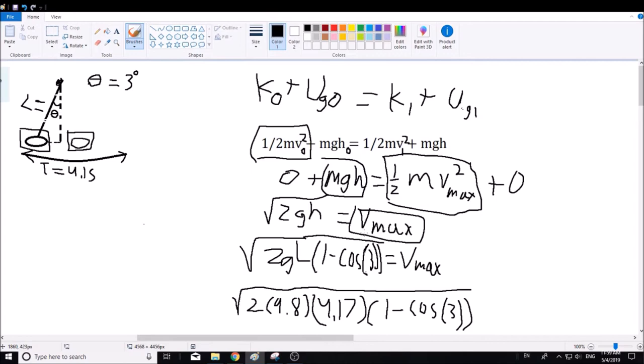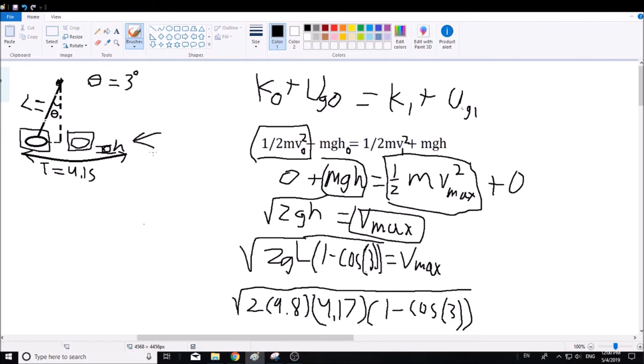Since the height is only as much as it can go from the top of the pendulum to the equilibrium point where it's going the fastest, we'll only need to find out that little area. That will be equal to L times 1 minus cosine of 3 degrees.